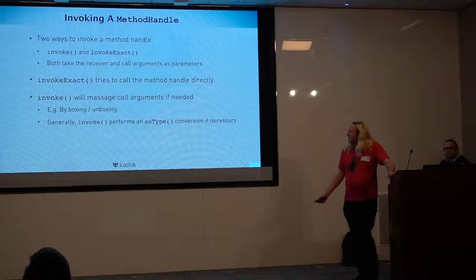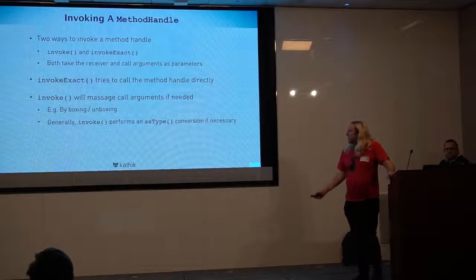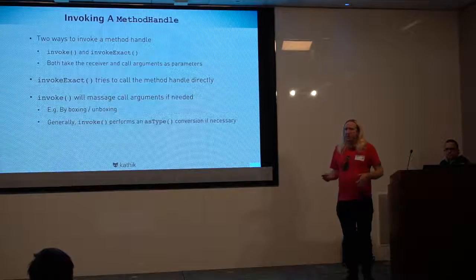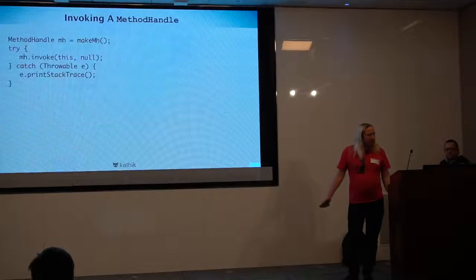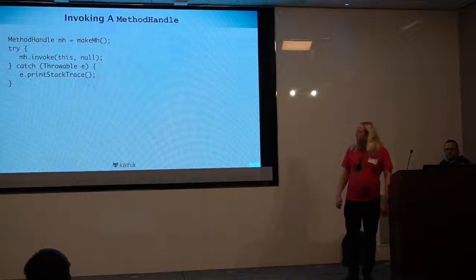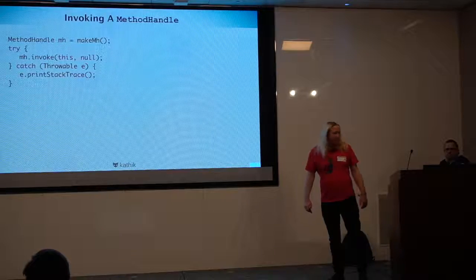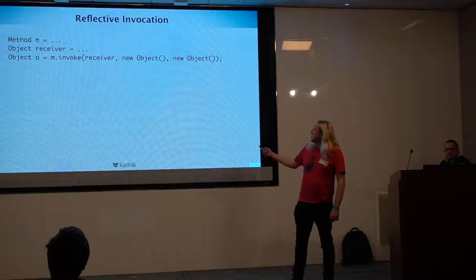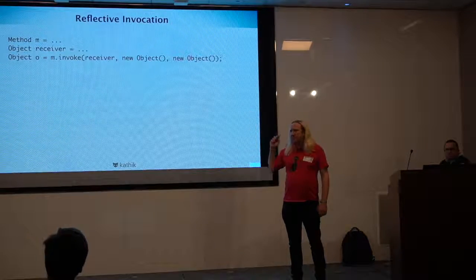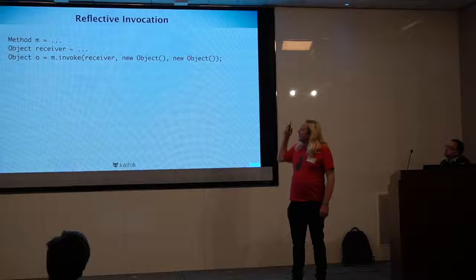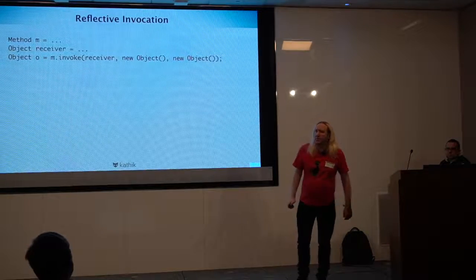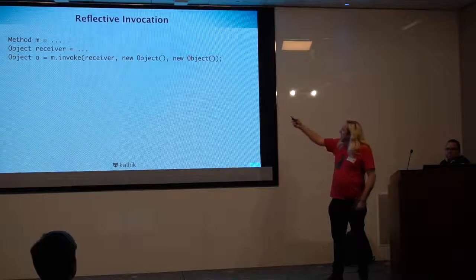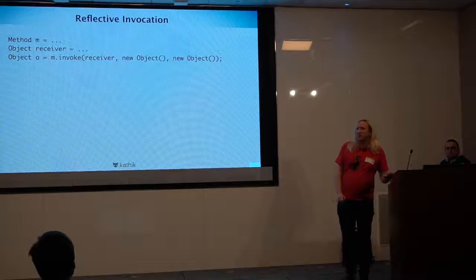You can invoke method handles directly or use methods that massage parameters, doing boxing and unboxing. Comparing reflection and method handles: for reflection you call m.invoke(receiver, args) where everything is Object or Object arrays. For method handles, looking at the bytecode, instead of invoking with object arrays, you see the actual correct static type signature — taking in a String receiver and returning int. Method handles preserve the static type information in the bytecode, giving the optimizer and JIT compiler a much better time.